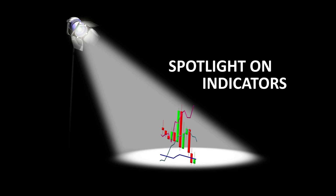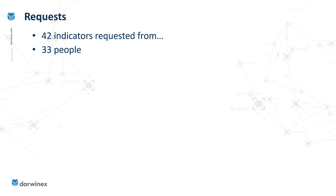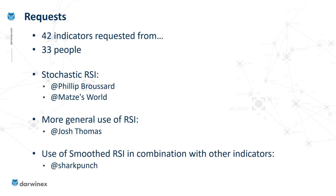This is the second indicator we've looked at in the Spotlight on Indicators series. If you want to see the episodes concerning the first indicator, the Ichimoku, you can find a link to the entire playlist in the description. Back at the beginning of the series, I requested that viewers send in suggestions for indicators they wanted me to perform analysis on. In all, there were 42 indicators suggested by 33 people, and four individuals all mentioned RSI in one form or another. Two people specifically asked for the stochastic RSI, one for the original RSI, and one wanted smoothed RSI in combination with other indicators.